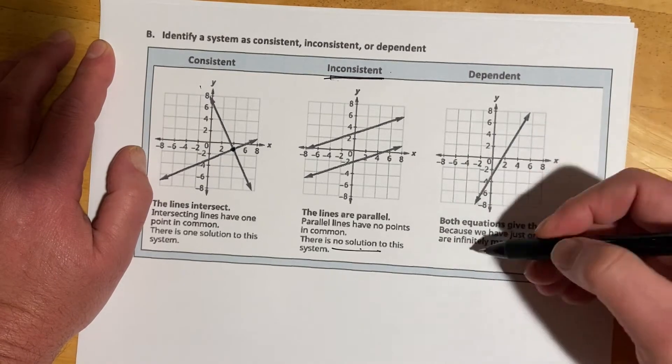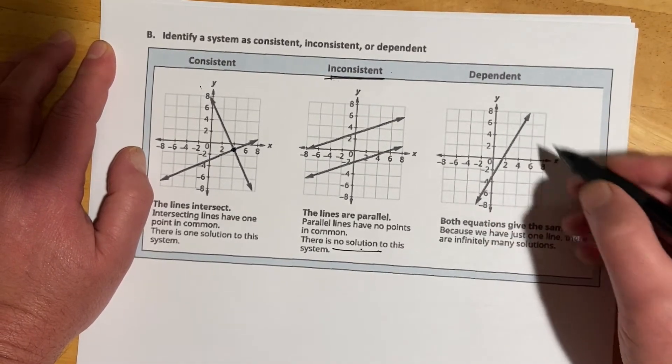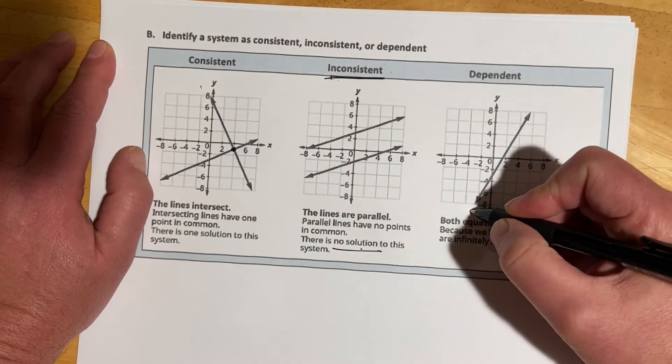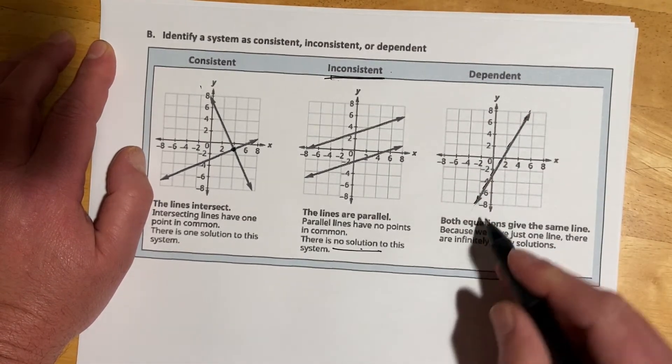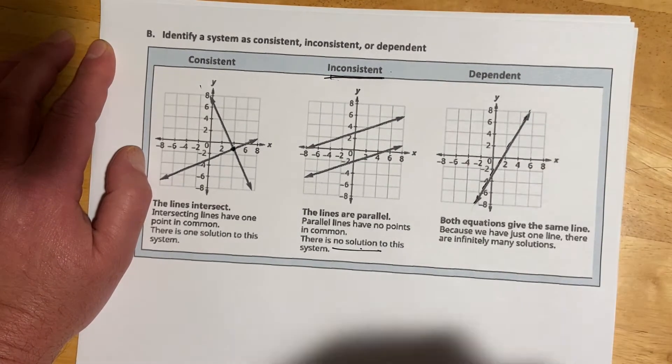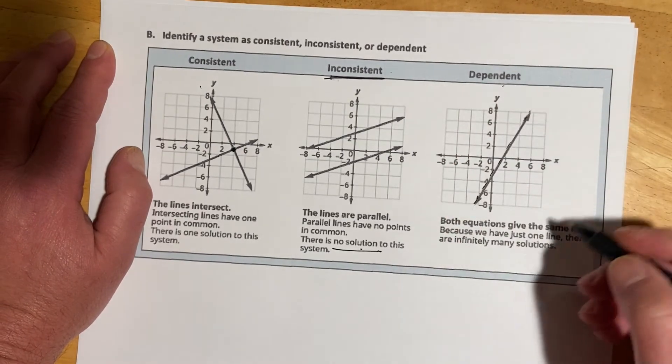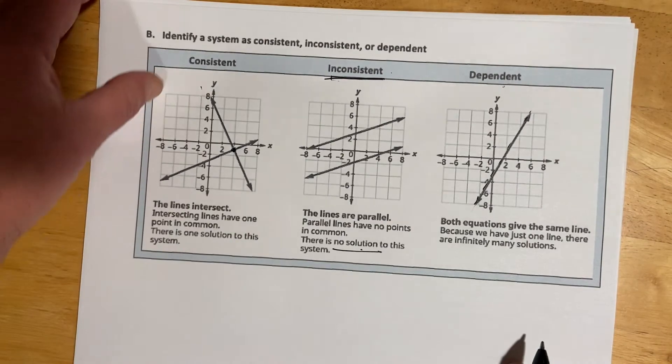And then if you graph the lines, and then it turns out they just kind of disguised them, and they're actually the exact same equation, and so they give the same line. So you graph the first one, and the second one's right on top of it. Then there's infinitely many solutions, because every single point on this line would be a solution to that system. And then the word that goes for that is dependent. So let's see what that looks like with examples.